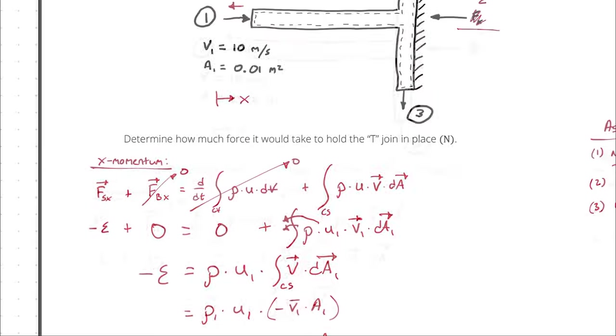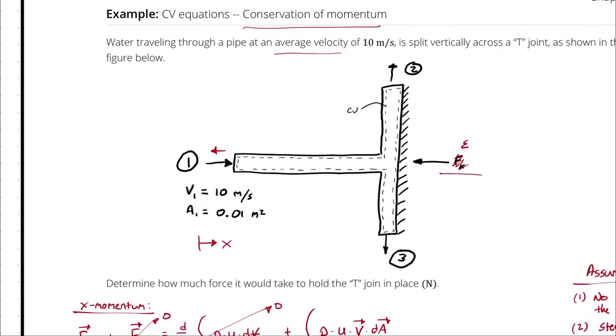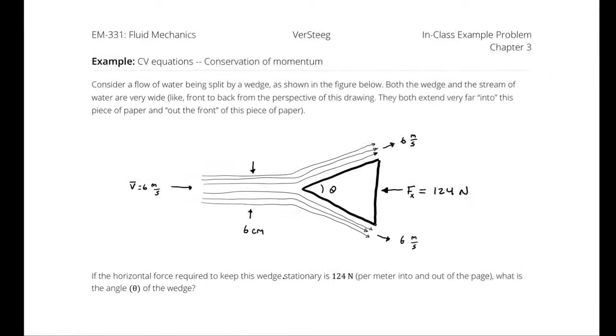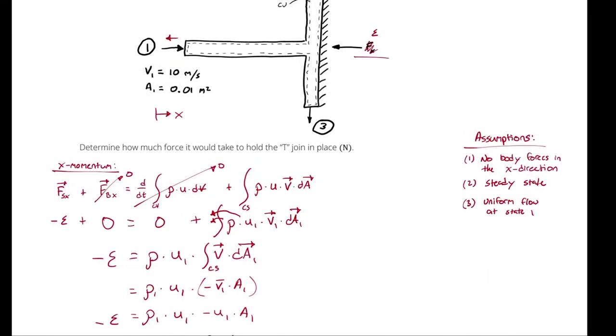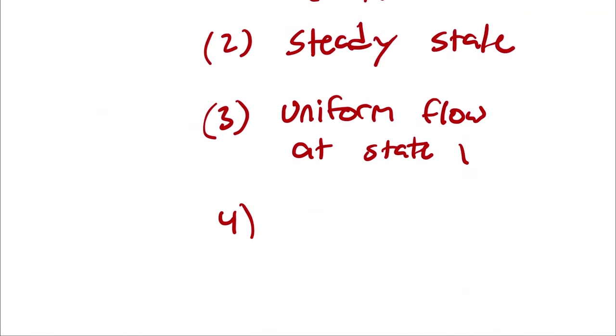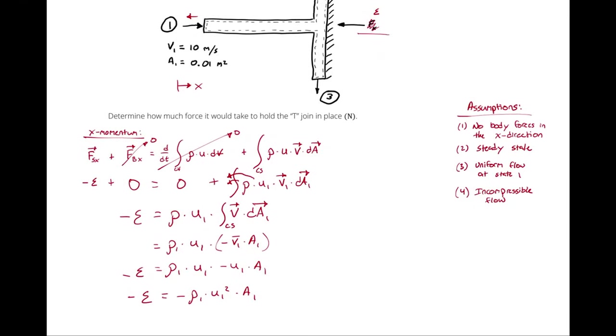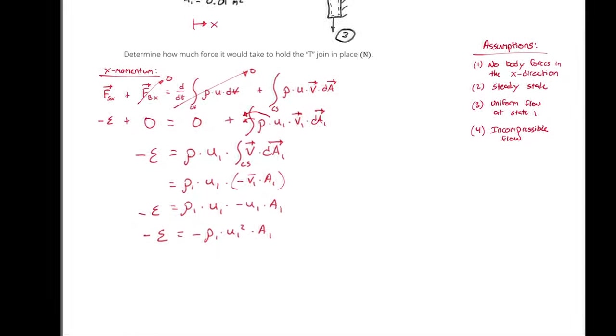And in the past, I will point out that we had been able to get rid of the density by assuming that we had incompressible flow. We still can assume incompressible flow. In fact, I should probably write that down as an assumption, even though it isn't particularly relevant here. But my density doesn't disappear this time because the left-hand side of the equation is not zero. So when I divide both sides of the equation by rho, it doesn't disappear. I have to keep track of it.